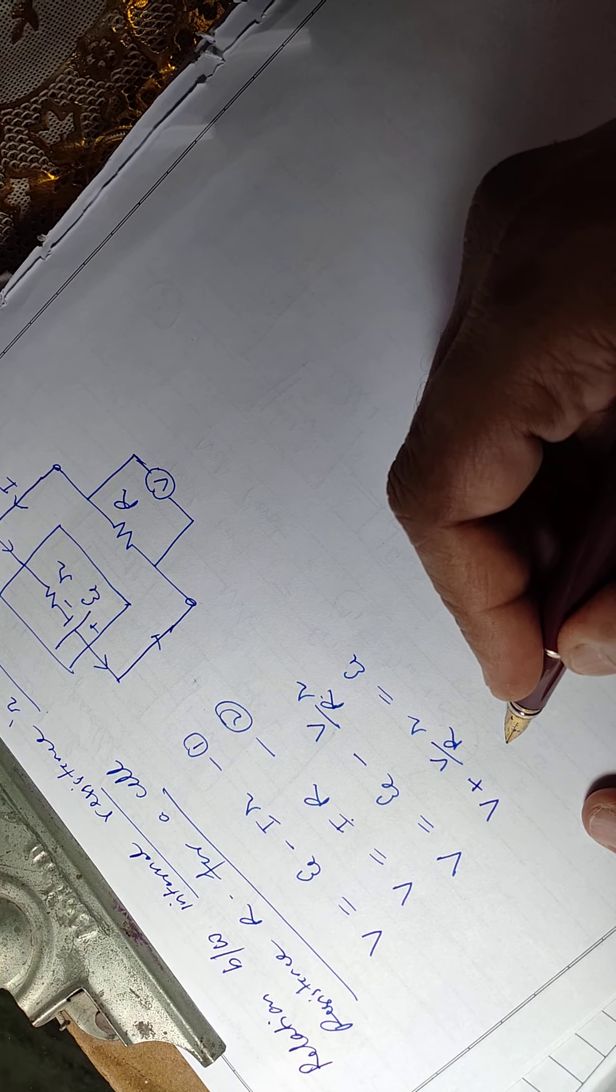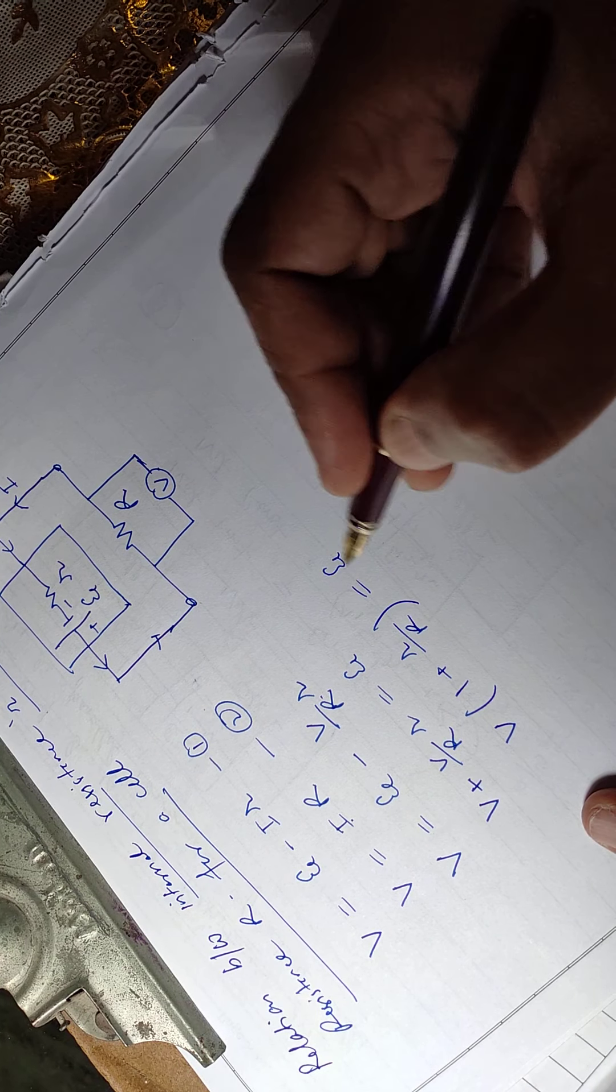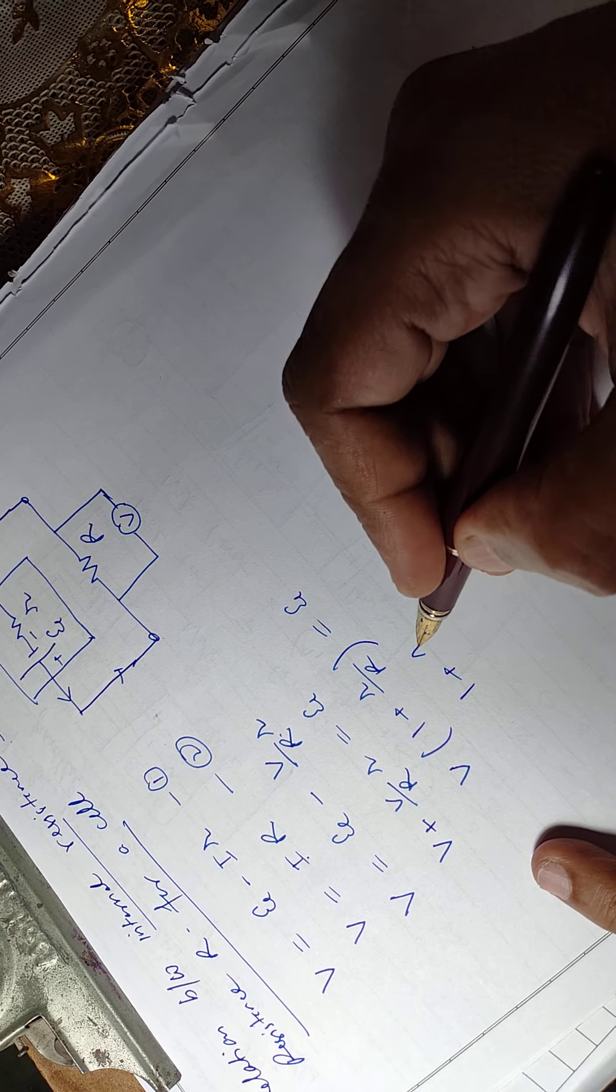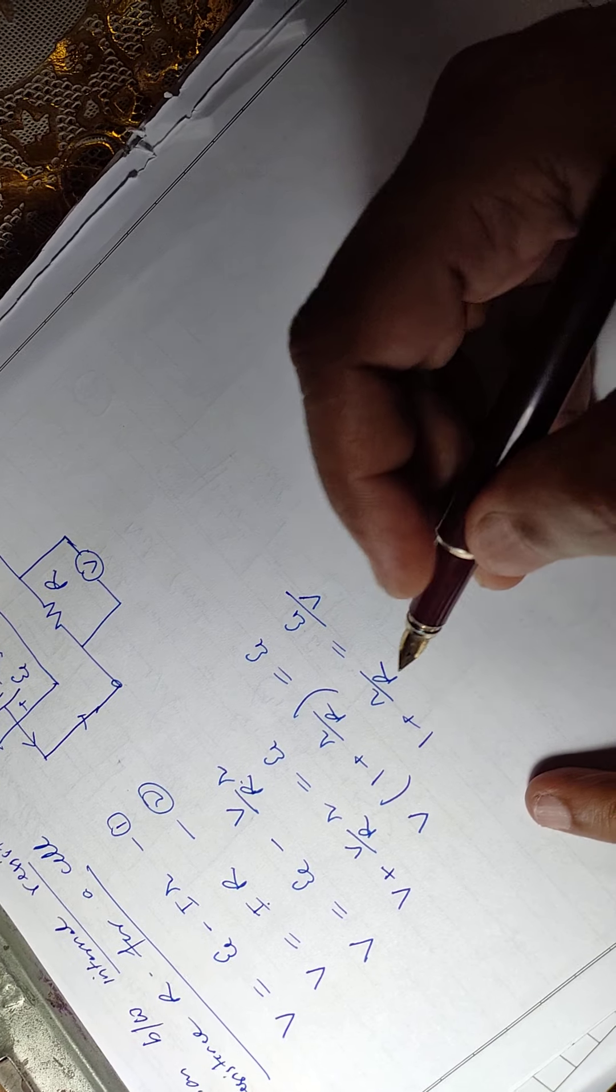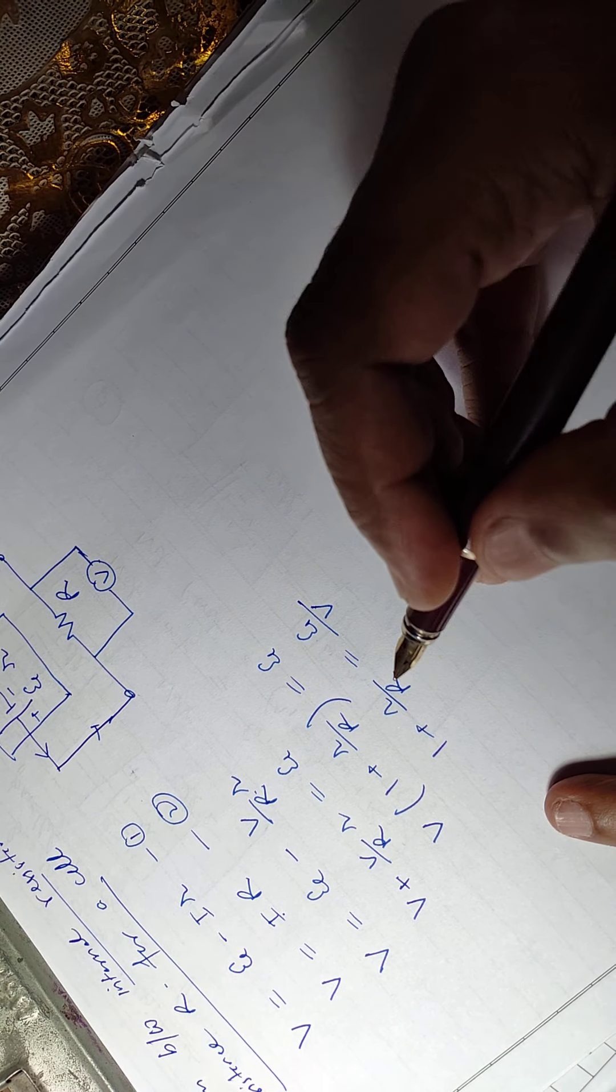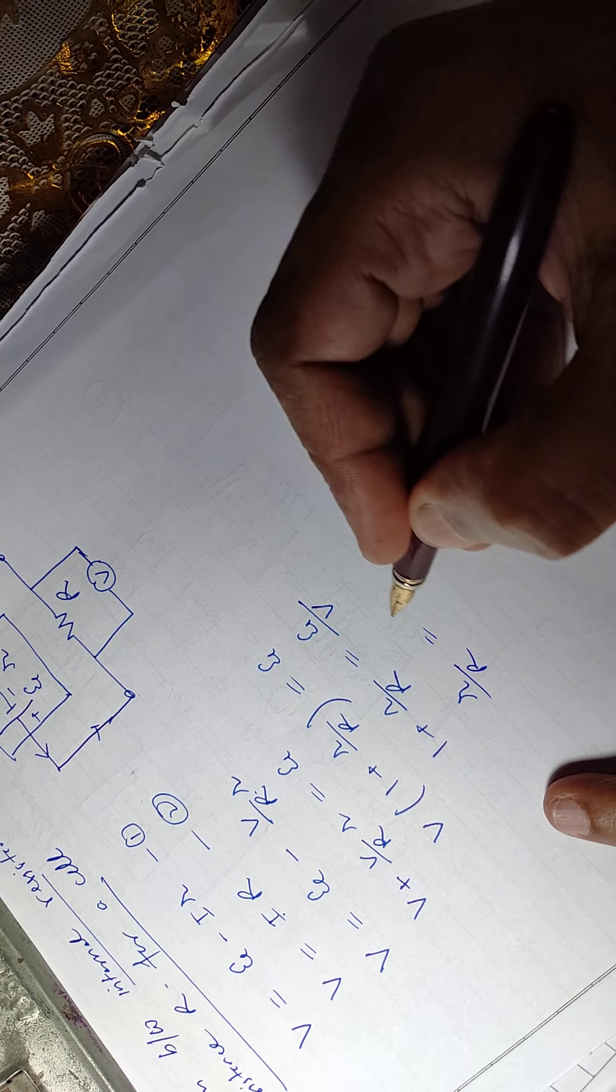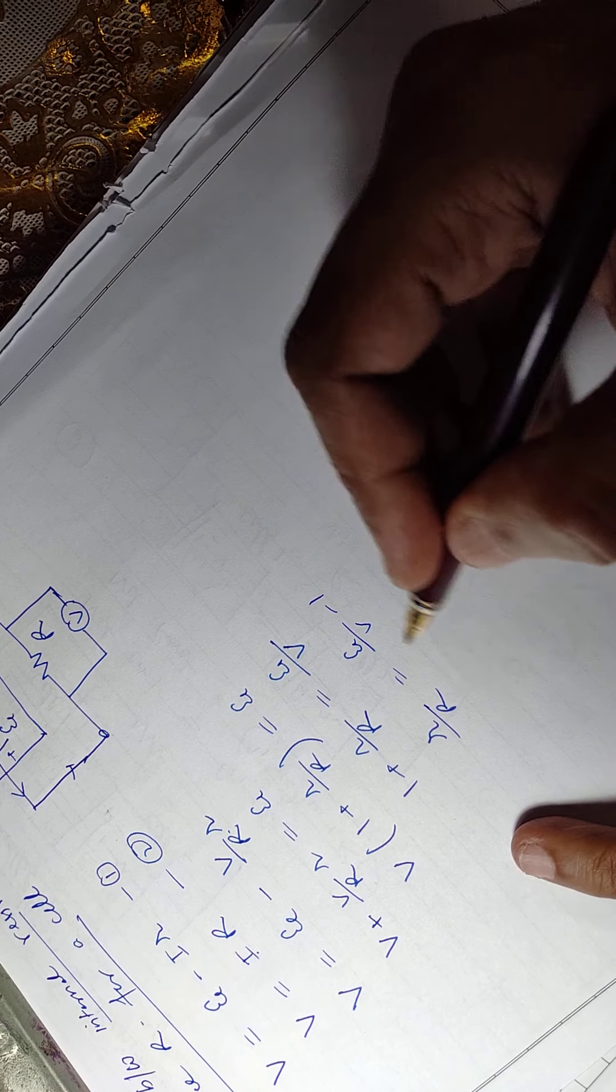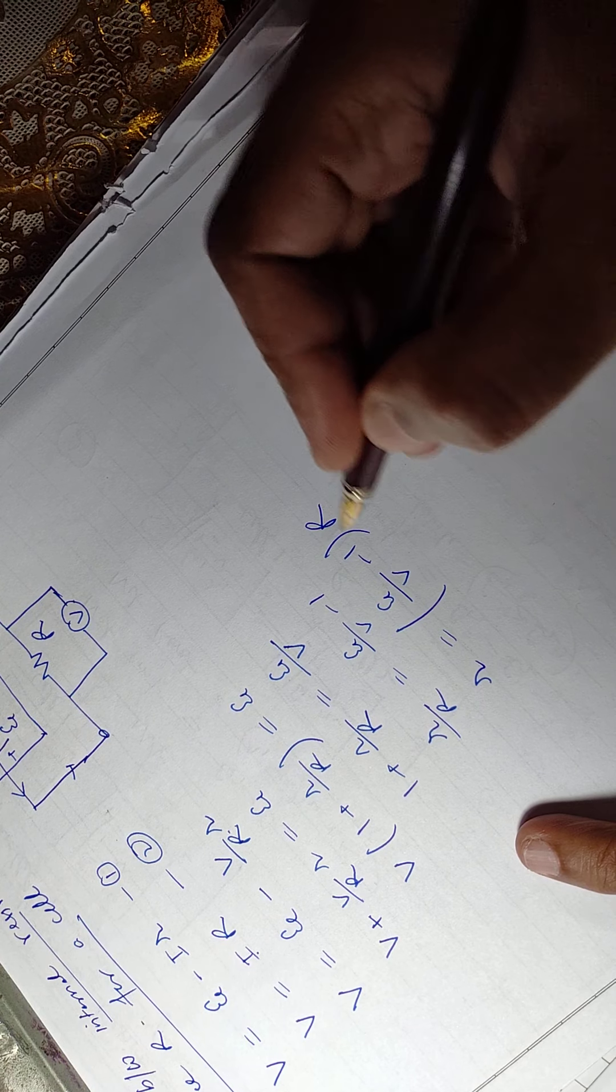And take the V common: 1 plus r by R is equal to xi. Or you can say 1 by R plus r is equal to xi by V minus 1, or r is equal to xi by V minus 1 into capital R.